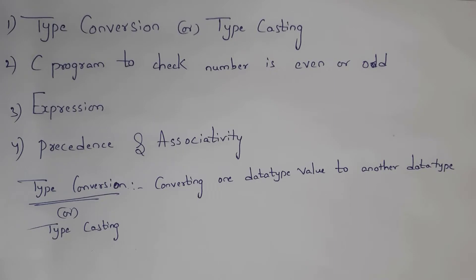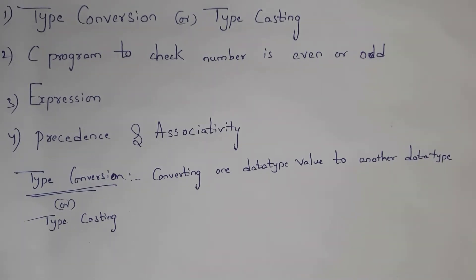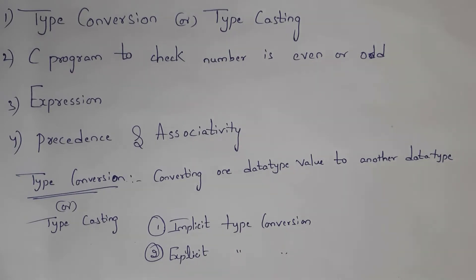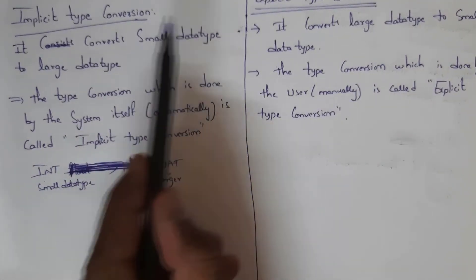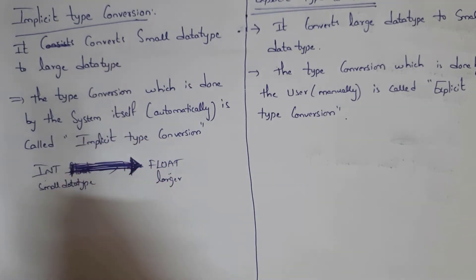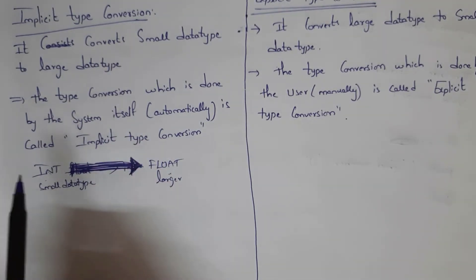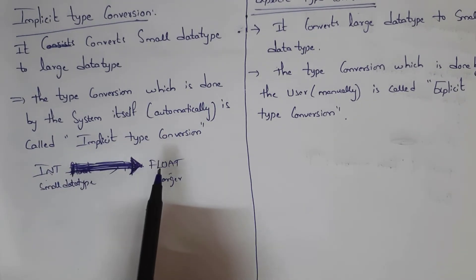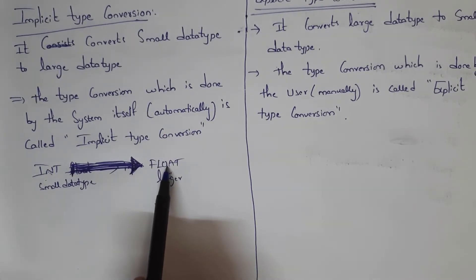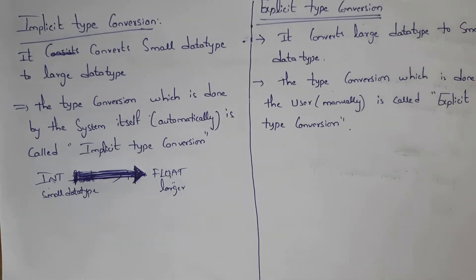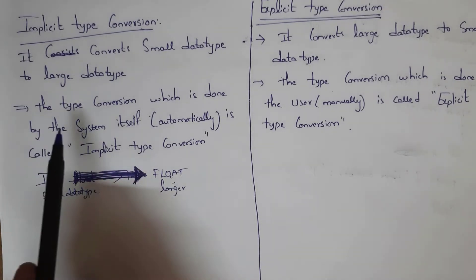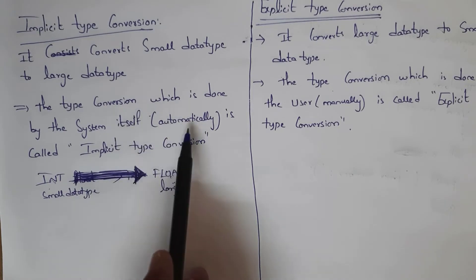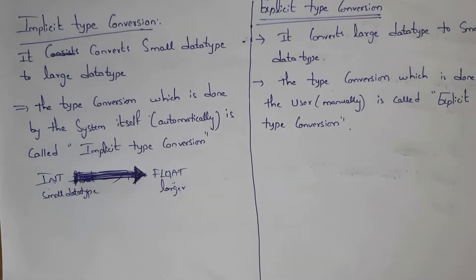Converting one data type value into another data type is known as type conversion. We also call this as type casting. There are two types of type conversion: one is implicit type conversion and the next one is explicit type conversion. Implicit type conversion converts a smaller data type value to a larger data type. The type conversion which is done by the system itself automatically is known as implicit type conversion.